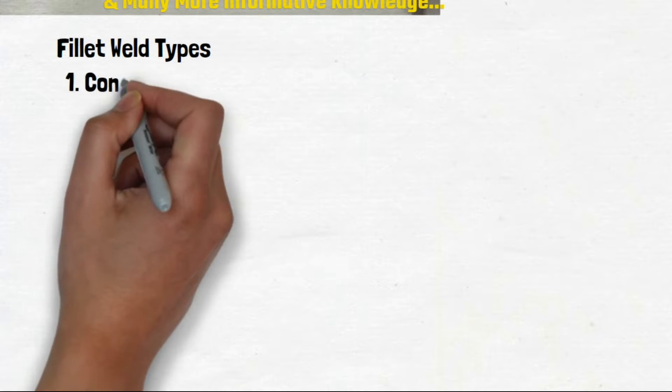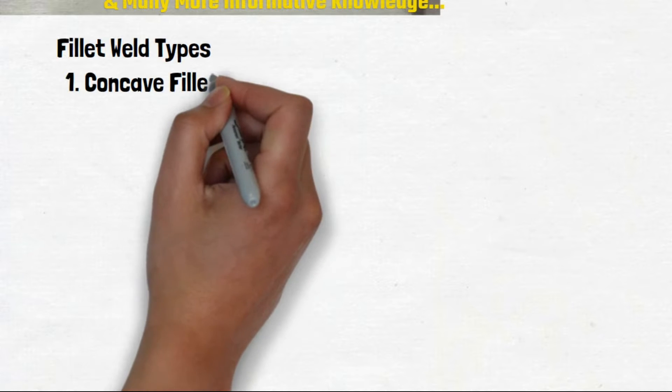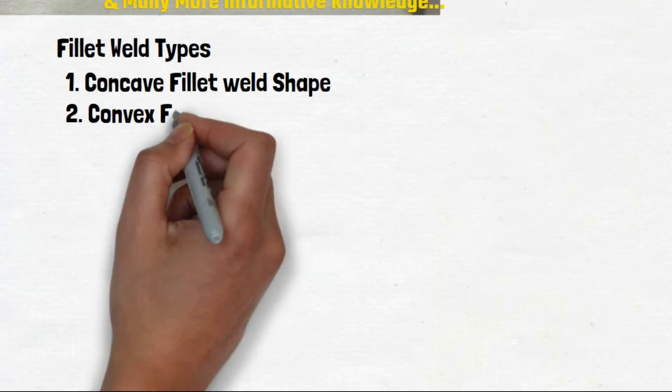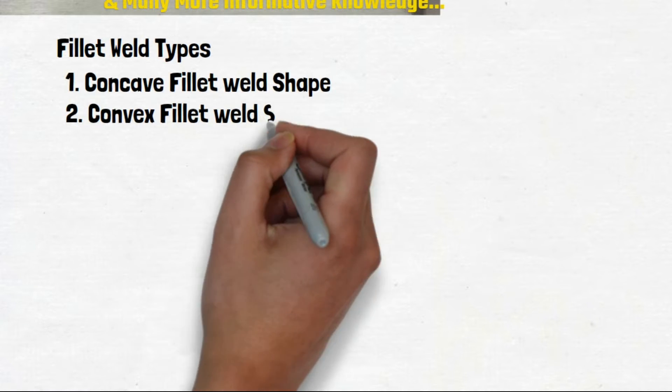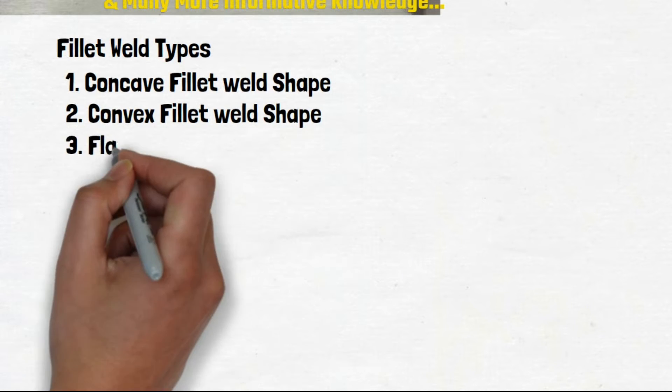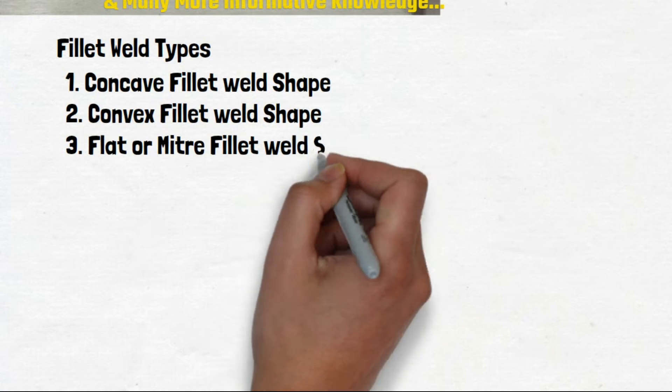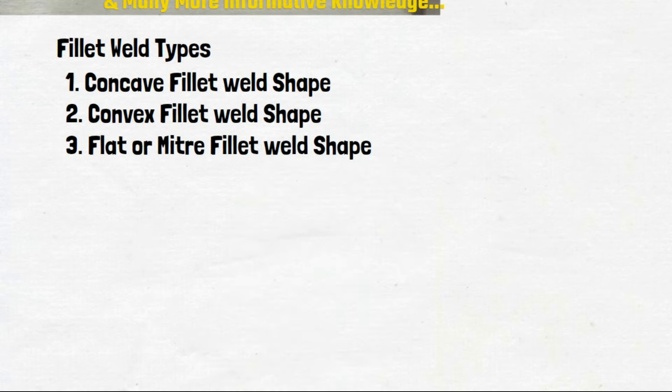Types of fillet welds. Fillet welds are mainly three types: concave fillet weld shape, convex fillet weld shape, and flat or miter fillet weld shape.